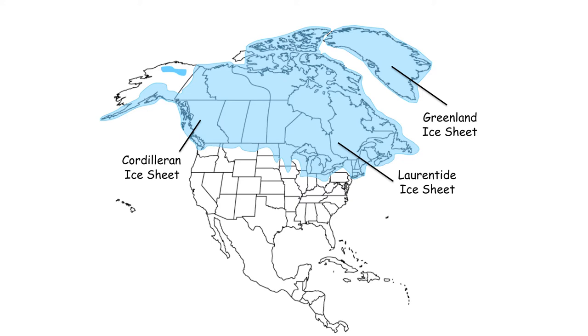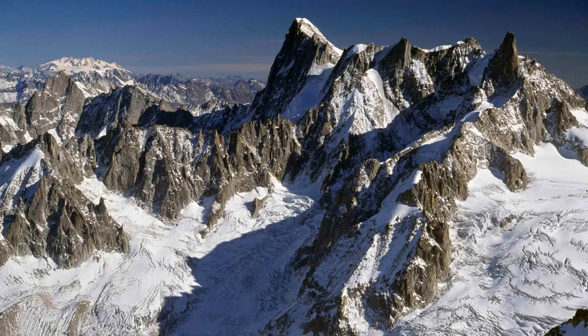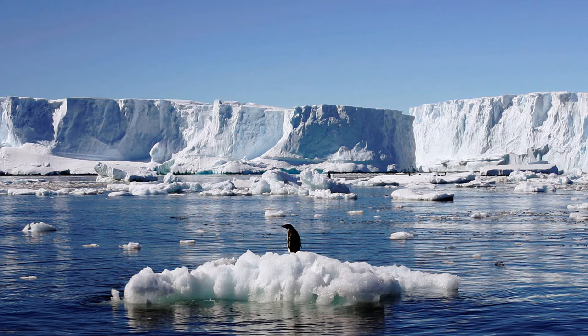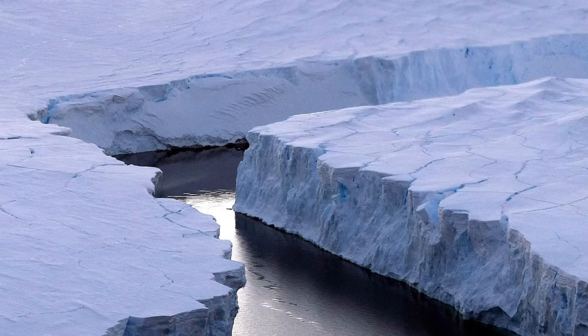Today ice sheets are only found in Antarctica and Greenland, but in the past ice sheets covered Canada, Scandinavia, and other northern areas of the Northern Hemisphere. Although these ice sheets disappeared when Earth's climate got warmer, they left behind evidence of their existence. Some of the most obvious signs of ancient ice sheets are mountain glaciers — think of them like islands. Ice sheets once connected all the mountain glacier islands to each other, but now the mountain glaciers are the only remnants of ice sheets that disappeared long ago.